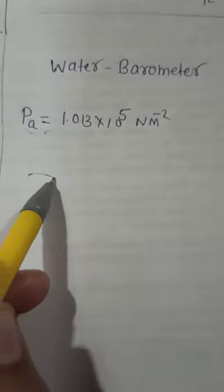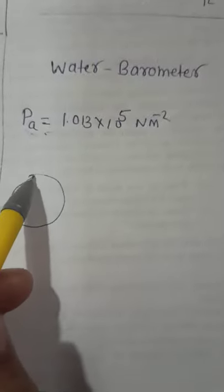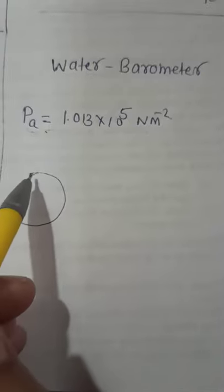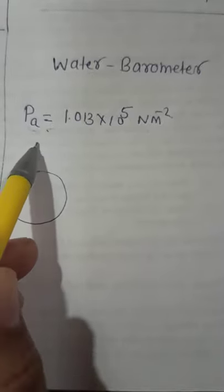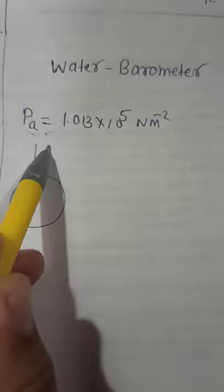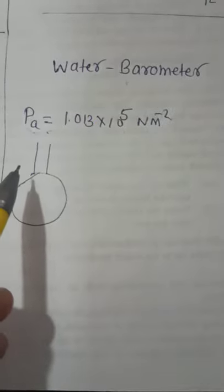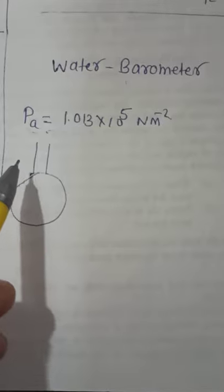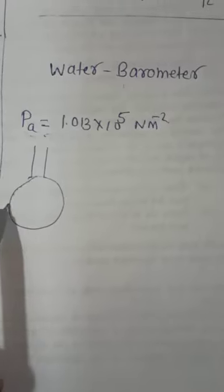Let us consider this is the Earth and we have to find the atmospheric pressure. So we have a height column. When we use a mercury barometer, it is 76 cm, which is 76 into 10 to the power minus 2 meters. But if we use a barometer with water instead,